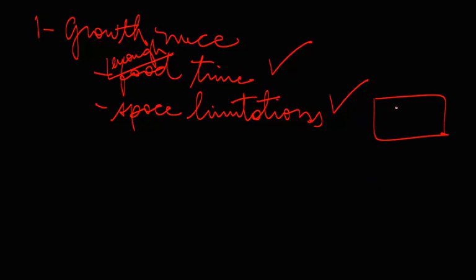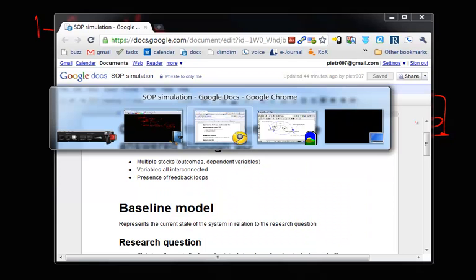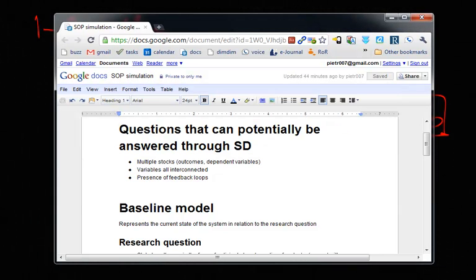So basically you have here little mice. Food is always available. But over time they start getting crowded. So that's basically the problem we're trying to solve. Now, would this kind of problem match the requirements for a system dynamics model? I guess that's the first question. Should you use a system dynamics model? Should you use an agent-based model? Should you use a discrete event simulation? Should you use a statistical model?